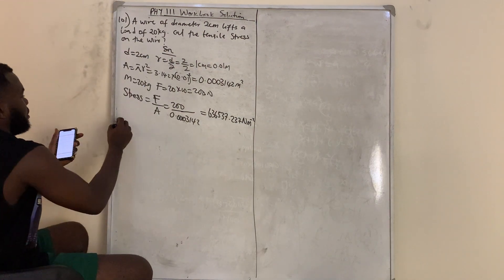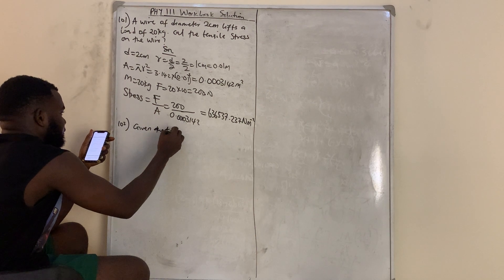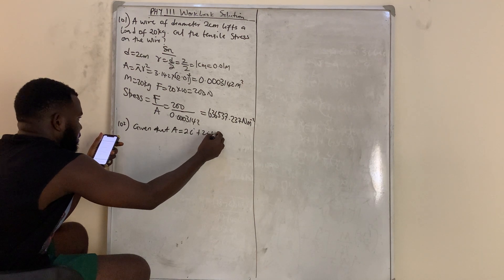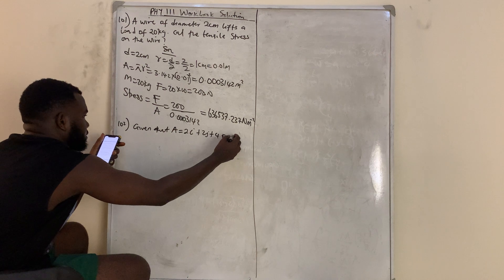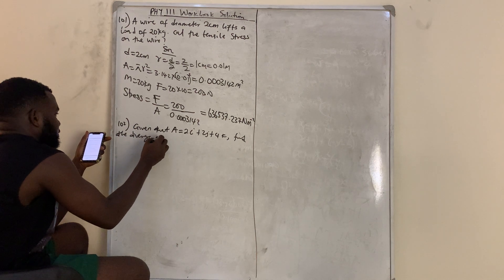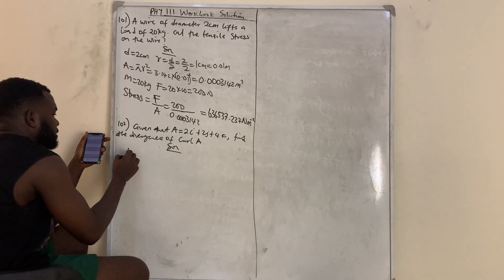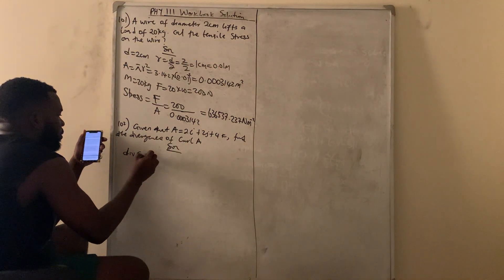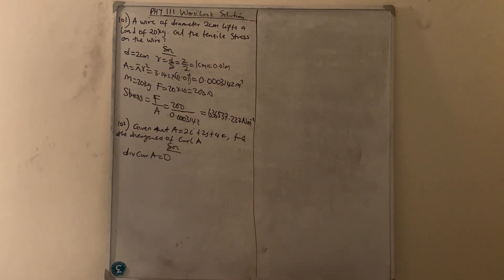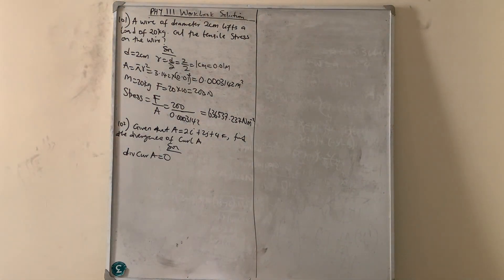Question number 102: Given that A = 2i + 2j + 4k, find the divergence of curl A. As I mentioned before, the divergence of the curl of any vector is zero.